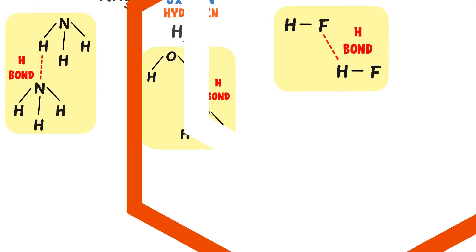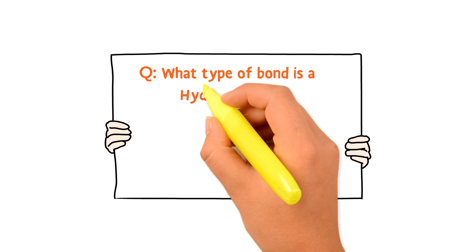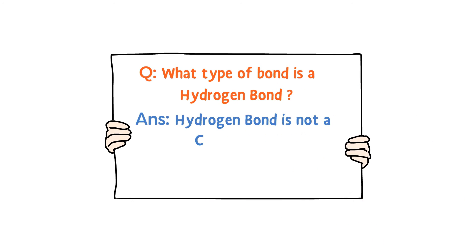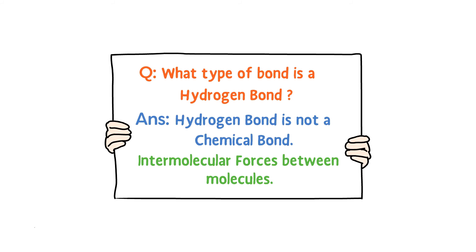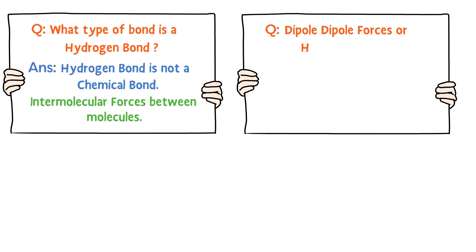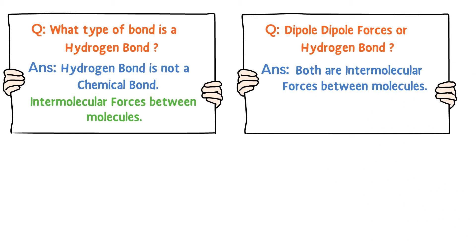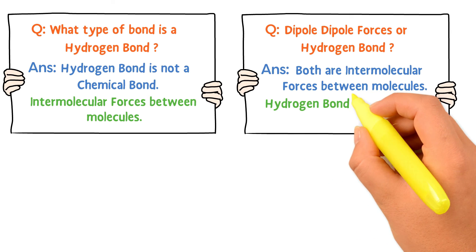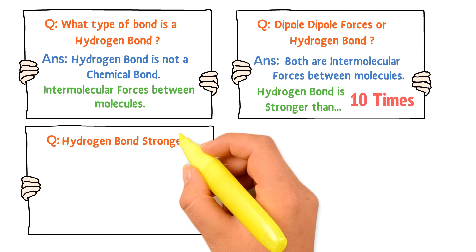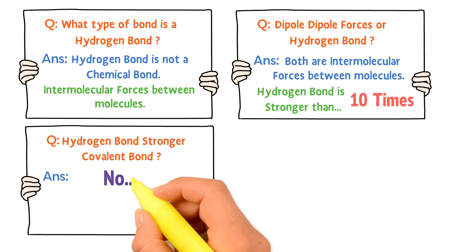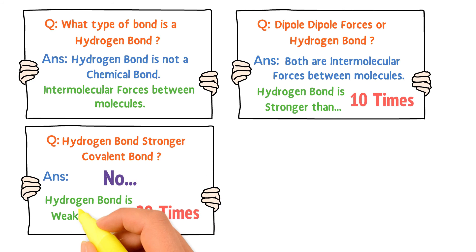Now some bullet questions regarding hydrogen bonding. First: what type of bond is a hydrogen bond? Hydrogen bonding is not a chemical bond — it is intermolecular forces between molecules. Second: which is stronger, dipole-dipole forces or hydrogen bonding? Both are intermolecular forces, but hydrogen bonding is a special type of dipole-dipole force — it is 10 times stronger than regular dipole-dipole forces.